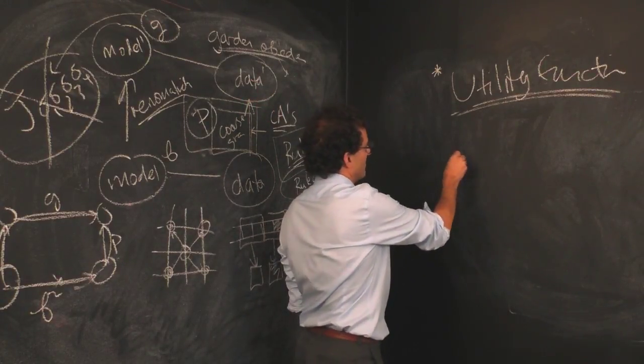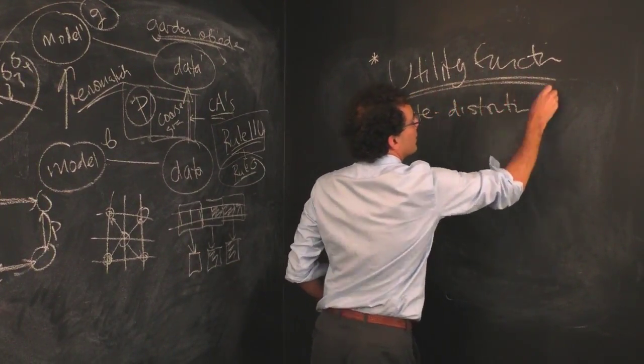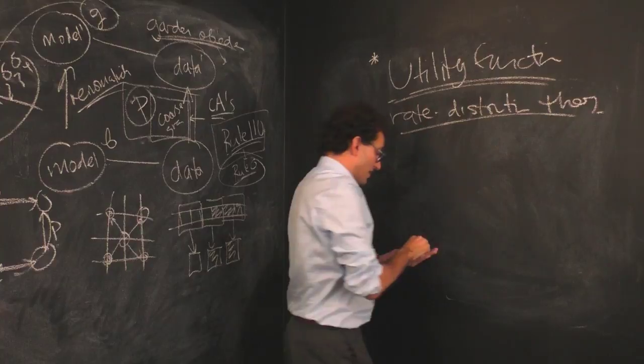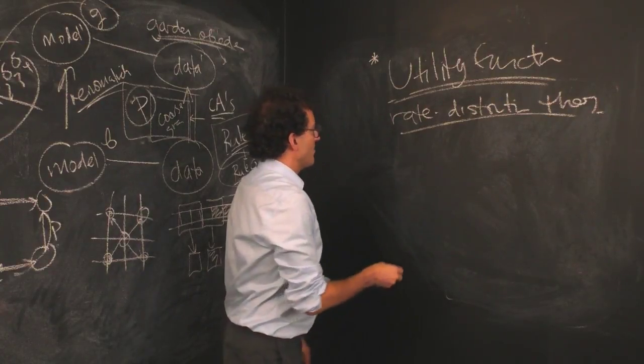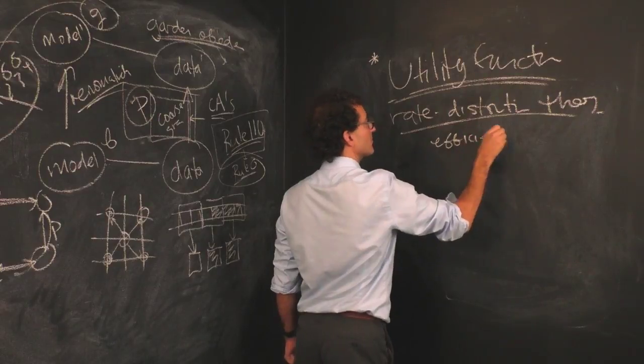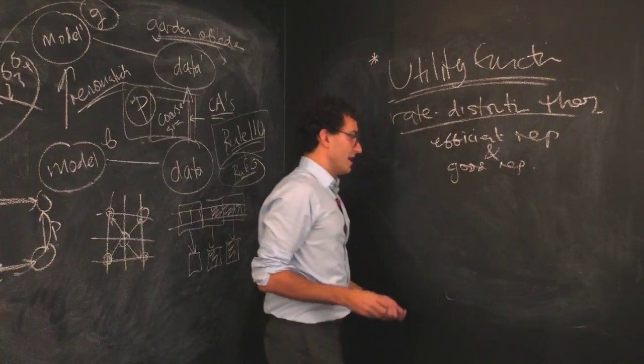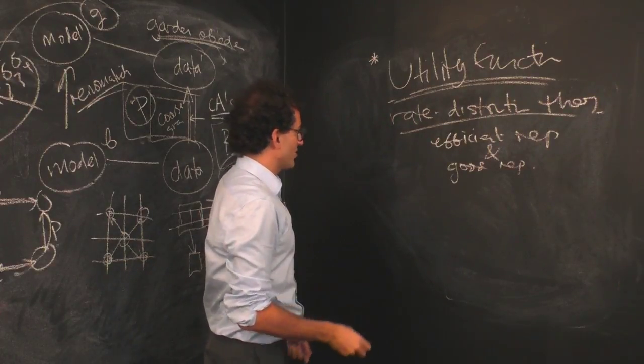And I'll give you an example. So this comes up a lot. We didn't talk about rate distortion theory. But rate distortion theory is essentially a story about how to balance the need for efficient representation and good representation.